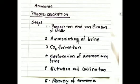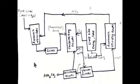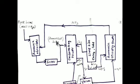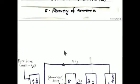The second step is ammoniation of brine. Ammonia is added to the brine in an ammonia absorber. Ammonia enters from the bottom and pure brine enters from the top in counter-current contact. After this counter-current contact, the brine is converted into ammoniacal brine. It is then filtered to remove impurities and the pure ammoniacal brine is sent to the carbonating tower.